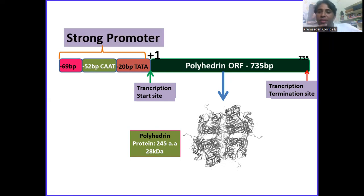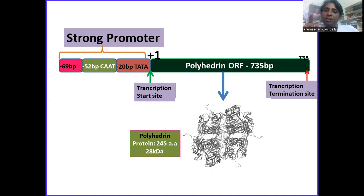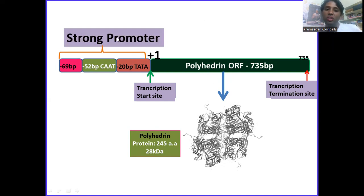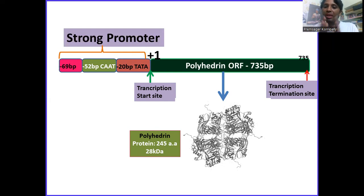Because of its strong promoter, polyhedrin is produced abundantly — it's involved in the formation of occlusion bodies, which resist most environmental conditions and protect the virus particles from temperature and other environmental factors. Importantly, the polyhedrin protein is not essential for viral replication; it is only useful in forming occlusion bodies. So if you disrupt the polyhedrin gene and place your gene of interest under the strong polyhedrin promoter, your gene of interest can be highly expressed and you get huge quantities of your protein of interest. That is the strategy.